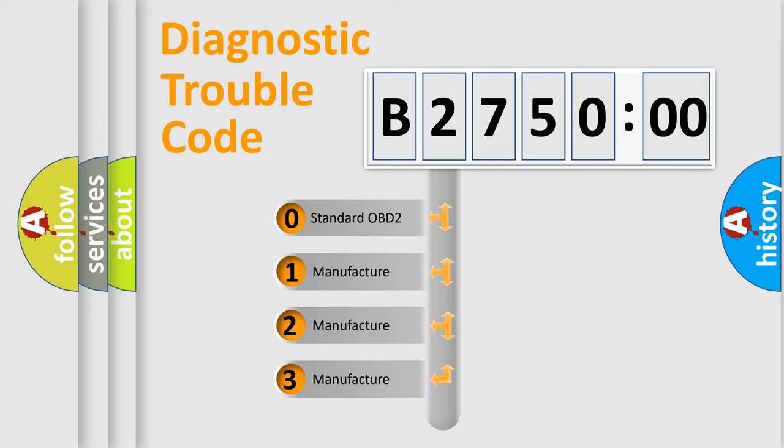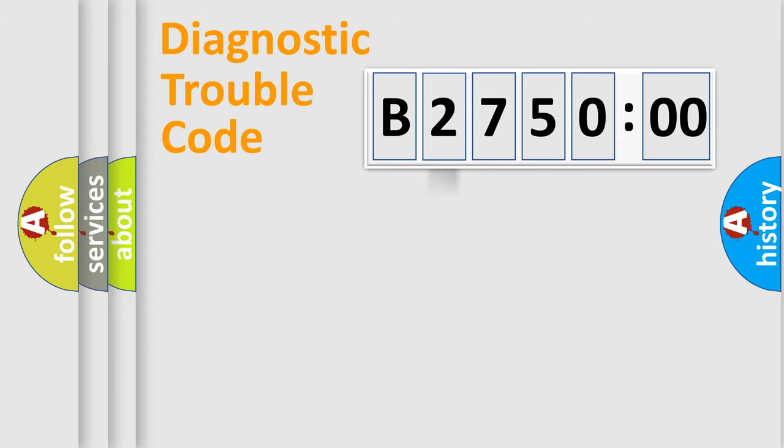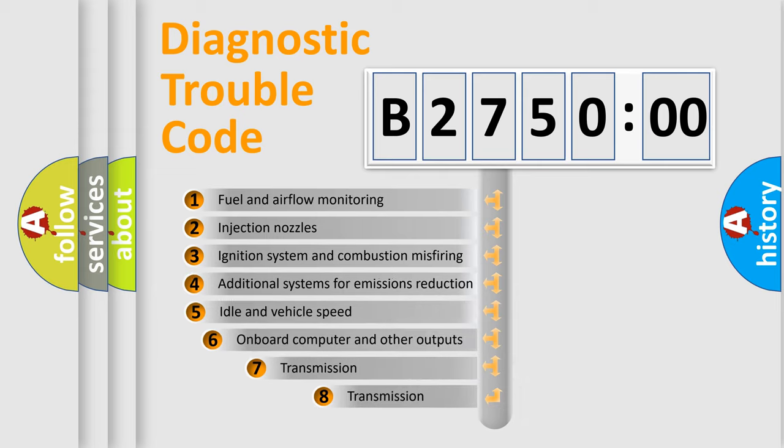If the second character is expressed as zero, it is a standardized error. In the case of numbers 1, 2, 3, it is a manufacturer-specific expression of the car error.